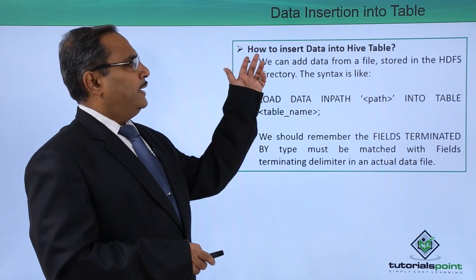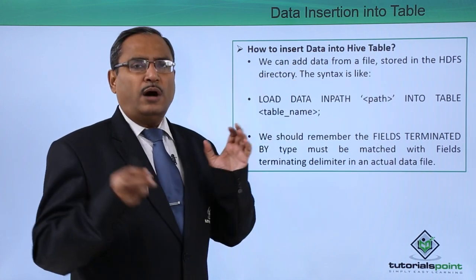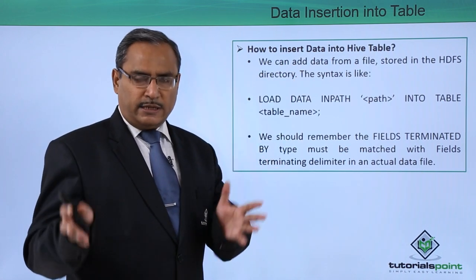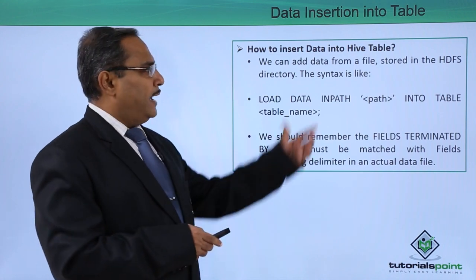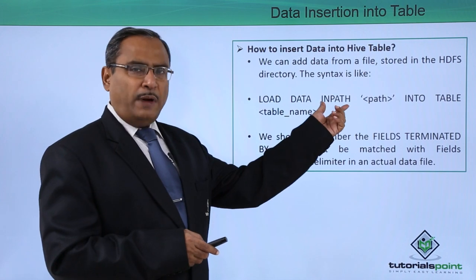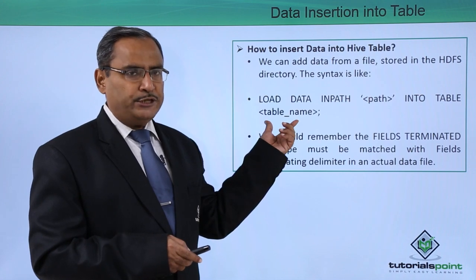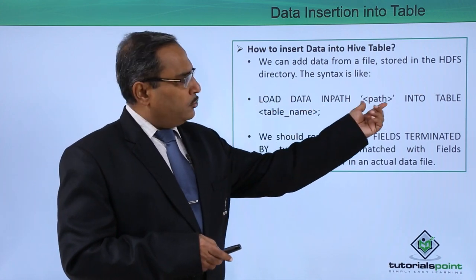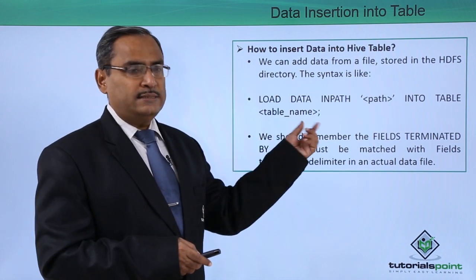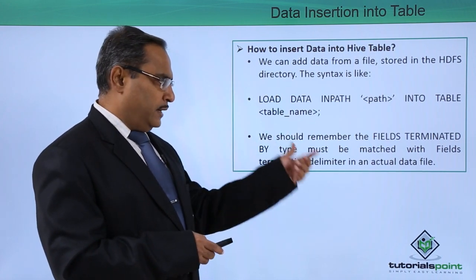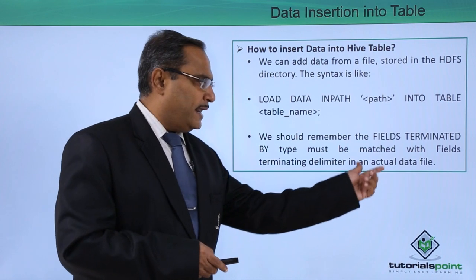First, we are starting with how to insert data into a Hive table by loading data from a file. We can add data from a file stored in the HDFS directory. The syntax will be: LOAD DATA INPATH, then the path to the file, then INTO TABLE, then the table name, and semicolon. The fields terminated by type must match the fields terminated delimiter in the actual data file.